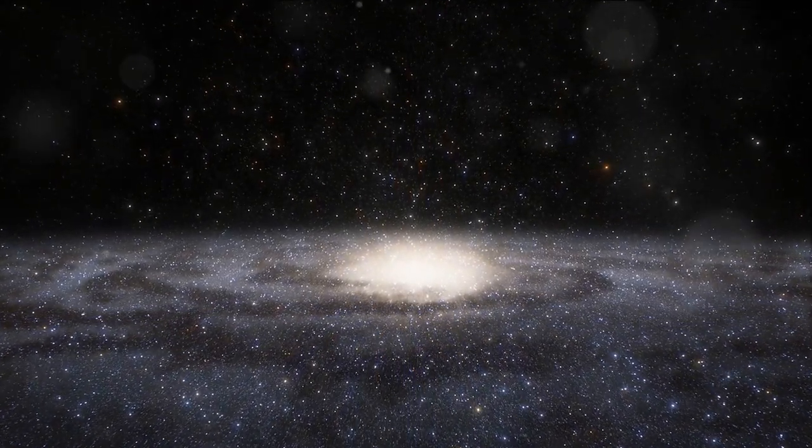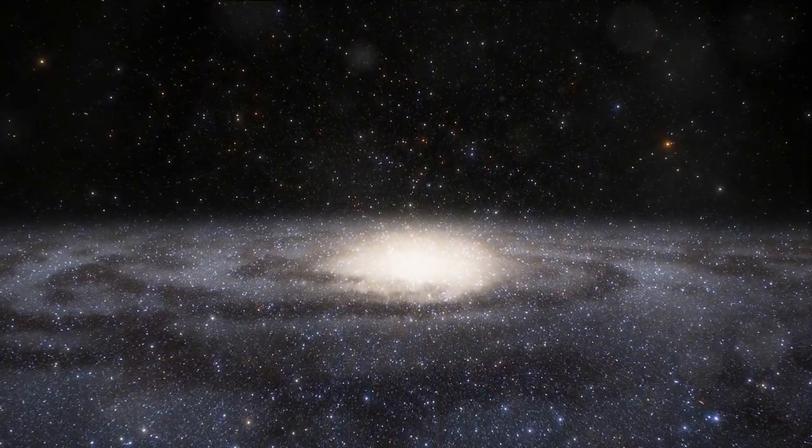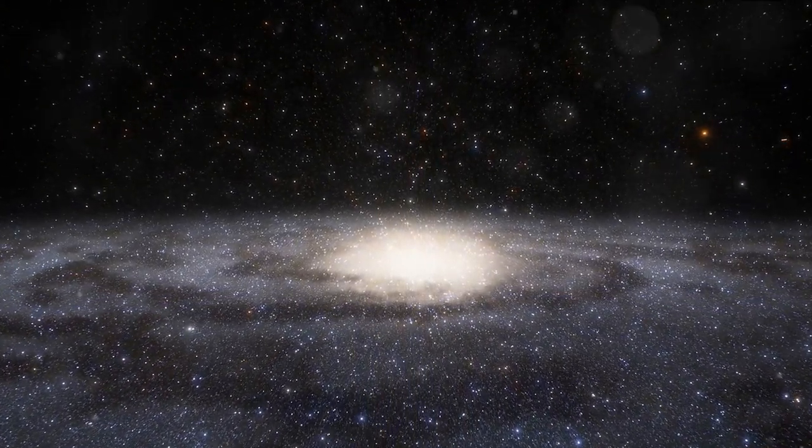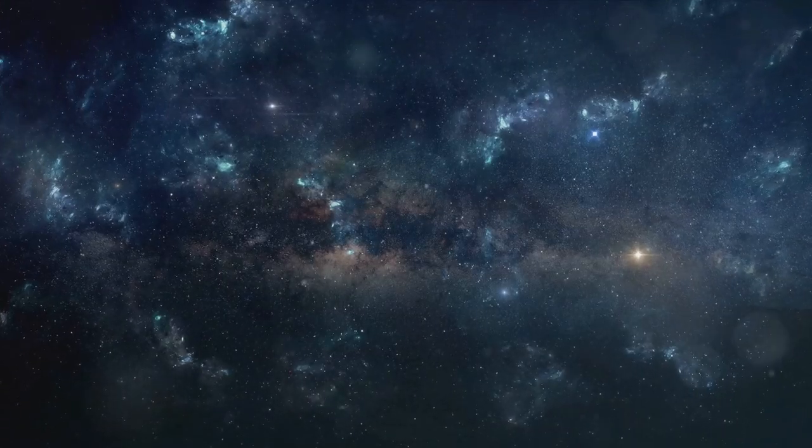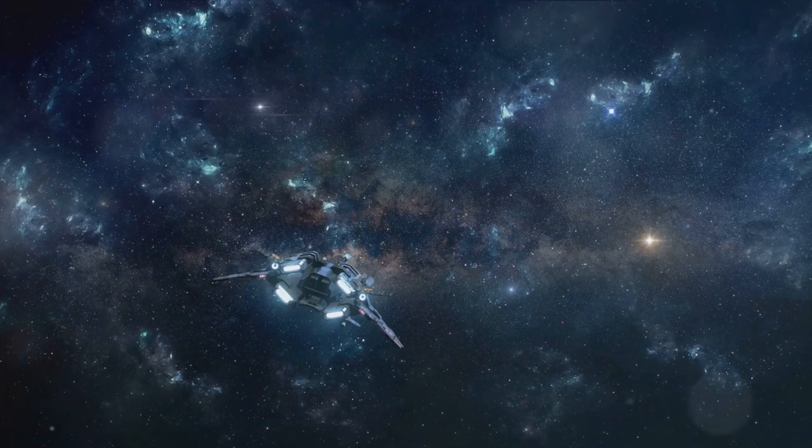Let's begin by picturing what dark matter might look like. It could be perceived as a ghostly translucent veil draped over the cosmos, a haze that swirls around galaxies, influencing the very canvas of space whilst remaining unseen.